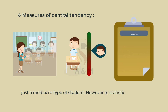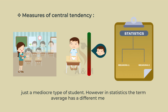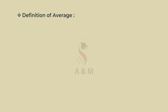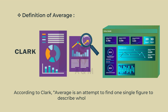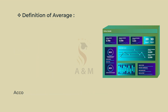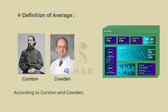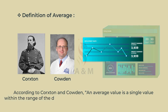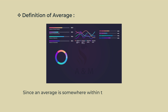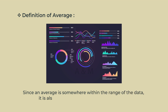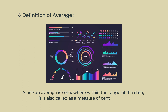However, in statistics, the term average has a different meaning. According to Clark, average is an attempt to find one single figure to describe a whole of figures. According to Croxton and Cowden, an average value is a single value within the range of the data that is used to represent all the values in the series. Since an average is somewhere within the range of the data, it is also called a measure of central value.